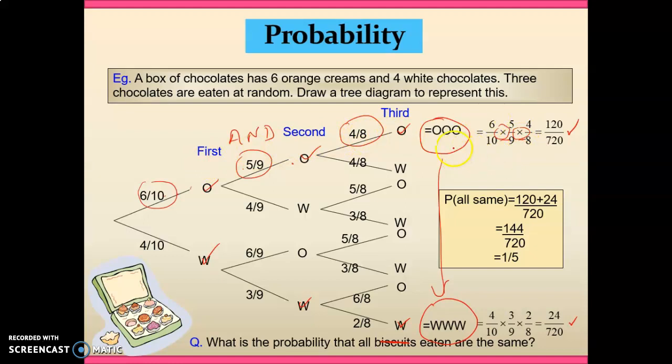However, if we are looking at alternative options, like I might have eaten all orange OR all white, that OR term indicates that we need to actually add our probabilities together. And you'll notice that as I've added them, I've added the numerators and kept the denominator as a common one. So we've actually calculated there.